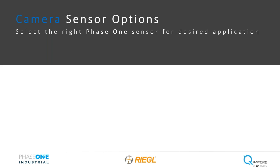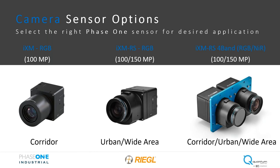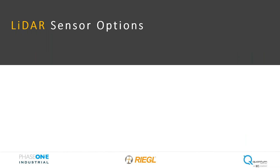Phase One is a preferred supplier to Regal for our airborne camera solutions, addressing various market vertical needs for resolution and coverage. For corridor or low-altitude applications, the IXM 100 is a smaller and lighter version ideal for unmanned and pod configurations where size and weight are critical. For higher altitude applications where area coverage efficiency dominates, we recommend the larger footprint of the IXM RS cameras with their highest quality lens options. Both camera models are available with either an achromatic or RGB chip, or cameras are paired and co-collected if four-band imagery is desired.